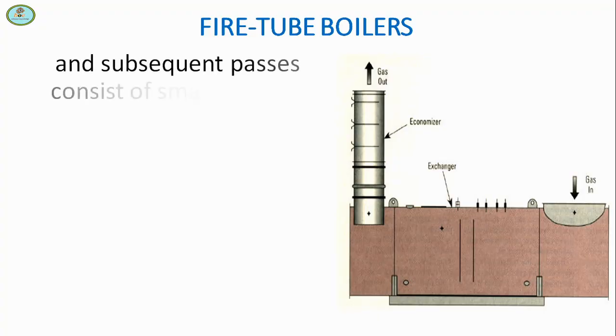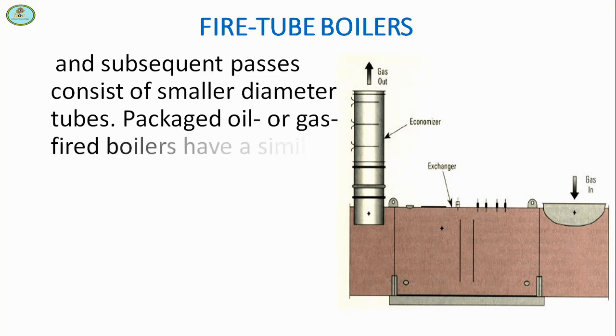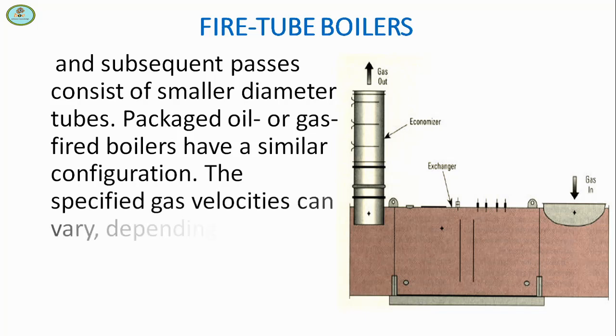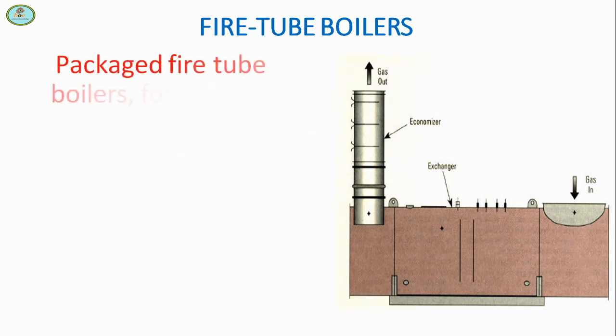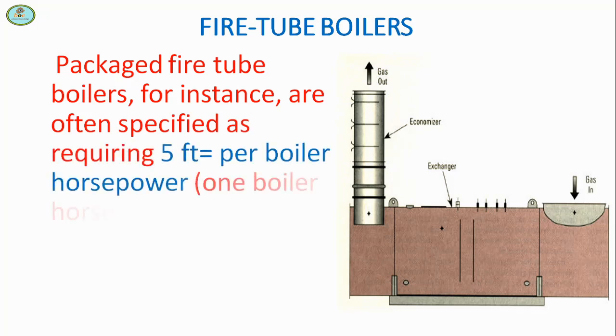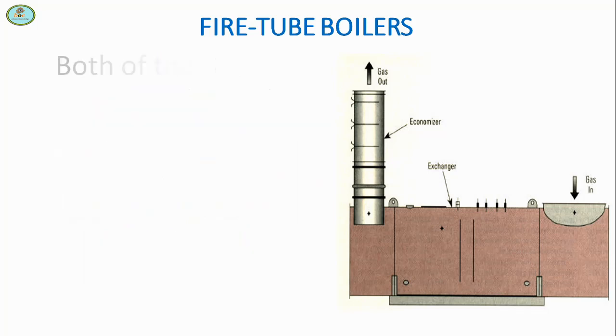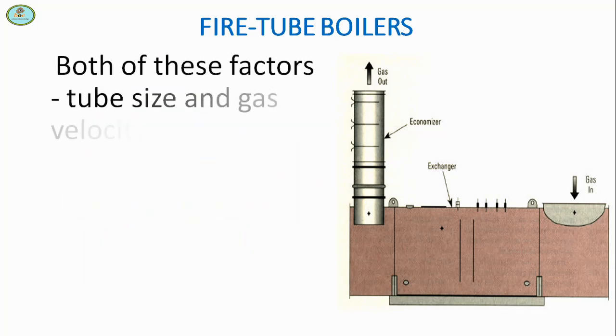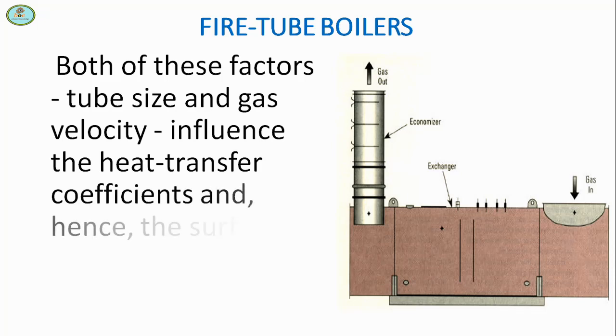Subsequent passes consist of smaller diameter tubes. Packaged oil or gas fired boilers have a similar configuration. The specified gas velocities can vary depending on the allowable gas pressure drop. Packaged fire tube boilers are often specified as requiring 5 feet square per boiler horsepower. One boiler horsepower is equivalent to 34,500 BTU per hour of output. Both tube size and gas velocity influence the heat transfer coefficients and hence the surface area.